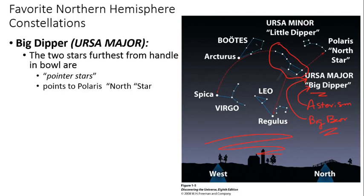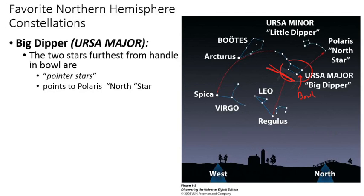One of the things I want you to know is if you can find the Big Dipper, which a lot of us can — at different times of the night and different times of the year it'll be in different orientations — you can take what we call the bowl. You can kind of see the bowl right here. These are the two far bowl stars. If you take a line up to the next relatively bright star, that star is Polaris.